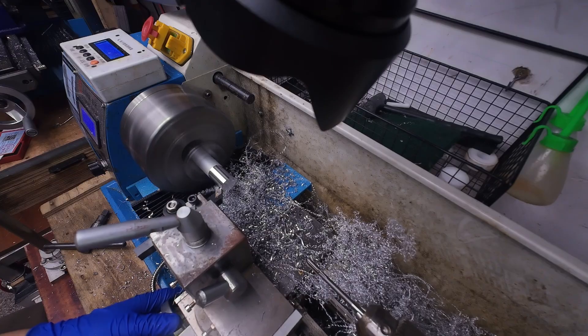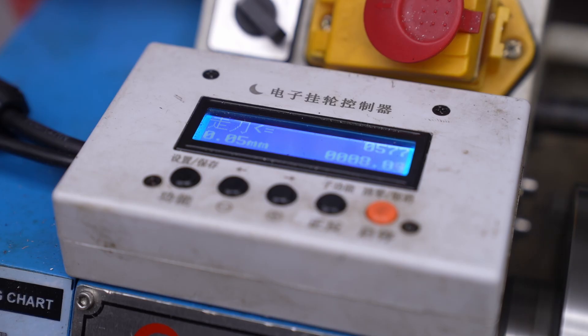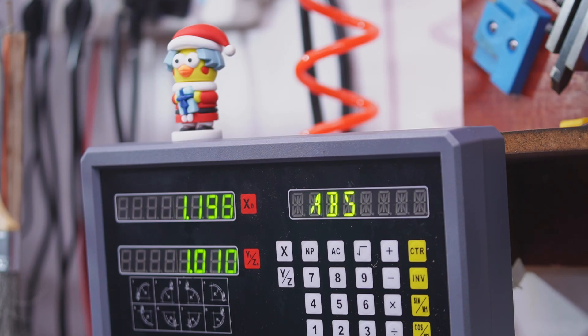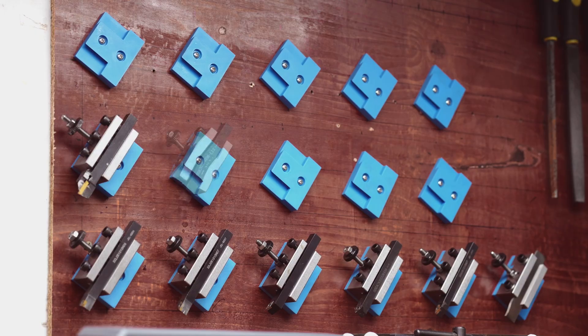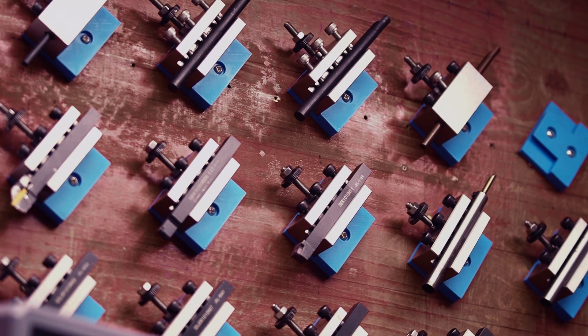The machine doing the heavy lifting is my mini lathe. I've modified the lathe with an electronic gearbox and added DRO. In a previous video, I also made a quick change tool post for it.